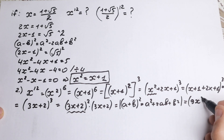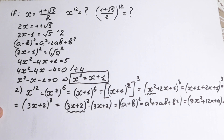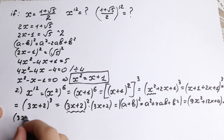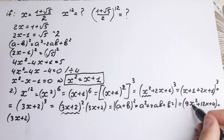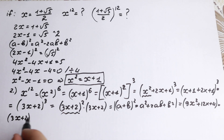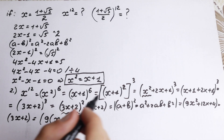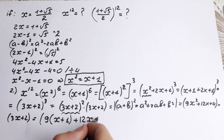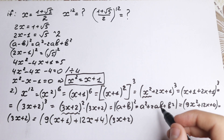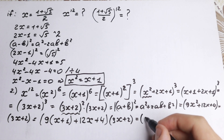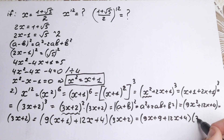We have 9x squared plus 12x plus 4, and we need to multiply this by (3x plus 2). Looking closely at the x squared term, we write it as x plus 1 since x squared equals x plus 1. So we have 9 times (x plus 1), which gives 9x plus 9. Then plus 12x plus 4, all times (3x plus 2).